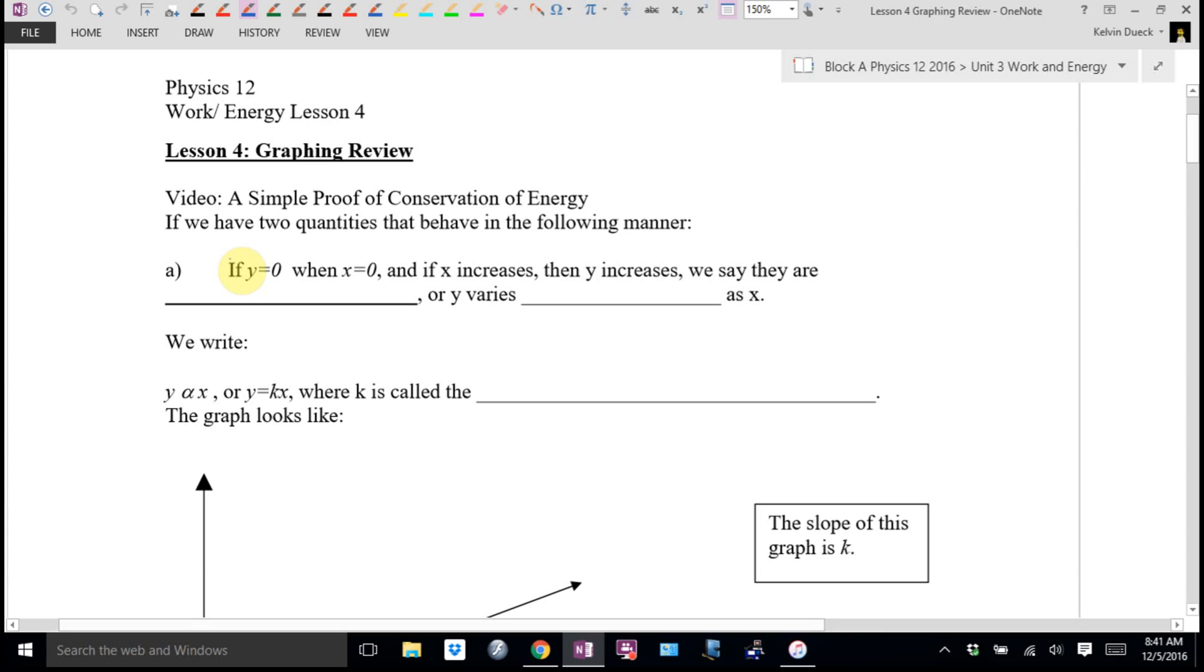Video, a simple proof of conservation of energy. I'll bring that up later. If we have two quantities that behave in the following manner, they go through zero, zero. If X is zero, Y is zero. And as X gets bigger, Y gets bigger. We say they are, there's a fancy phrase, directly proportional.